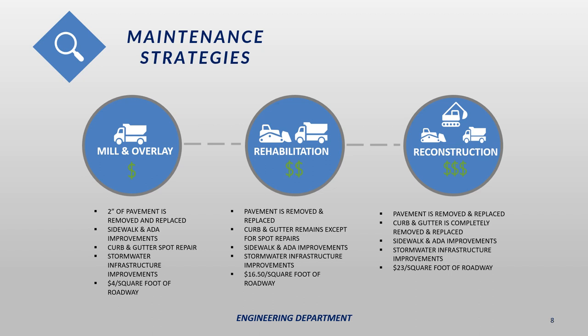The next type of project is what we call a rehab. This is where we replace the entire pavement section but leave the curb and gutter largely in place. We do spot repairs on the curb and gutter and make ADA updates and storm sewer improvements as well. This project is more involved than a mill and overlay and, on average, costs about $17 per square foot of roadway. A reconstruction is where we completely remove and replace the pavement and the curb and gutter. This is the most complex type of project we do and typically costs about $23 a square foot — about six times what a mill and overlay will cost.